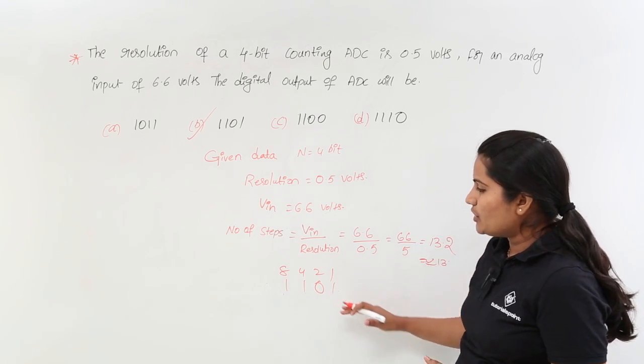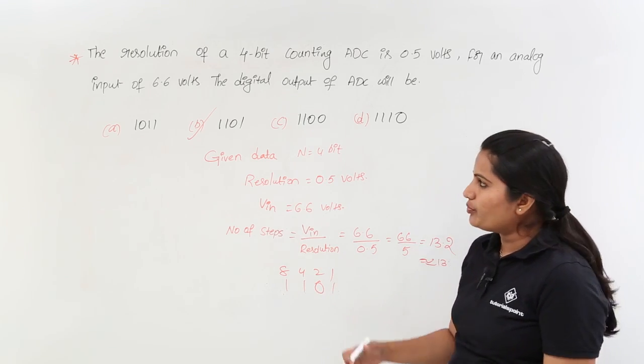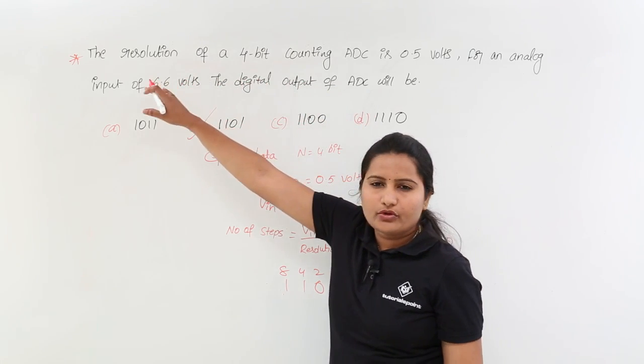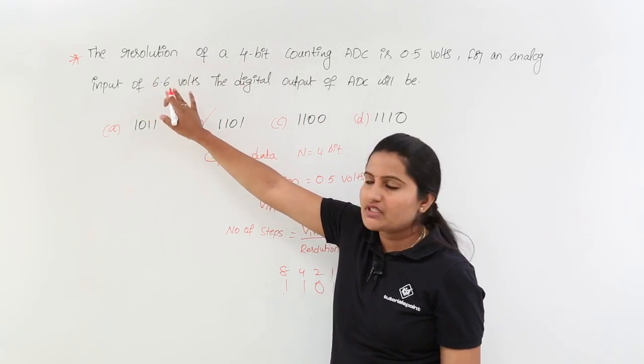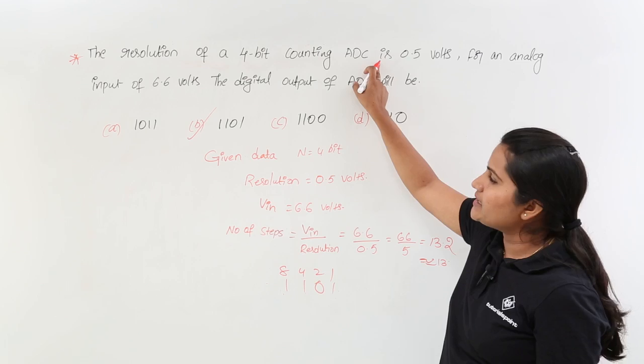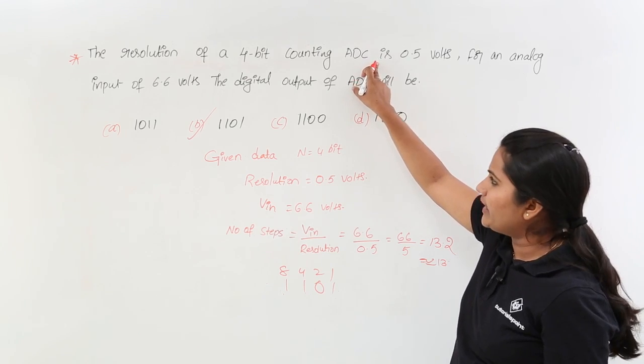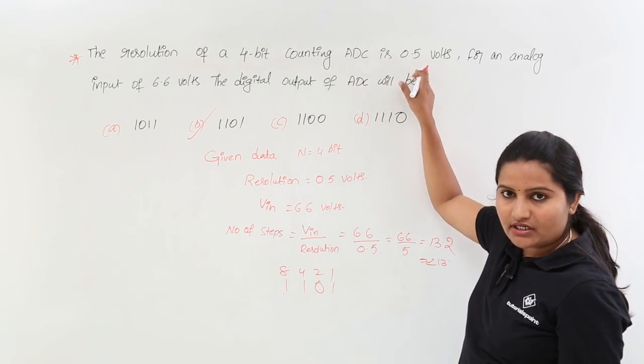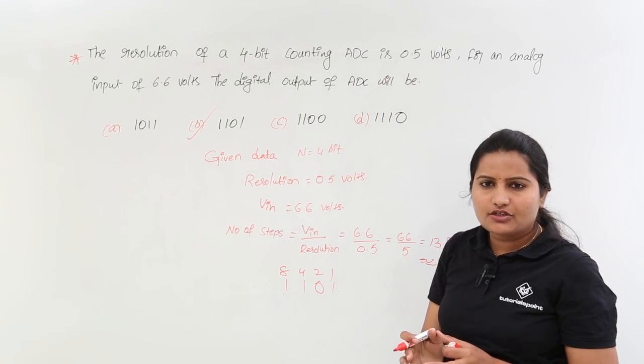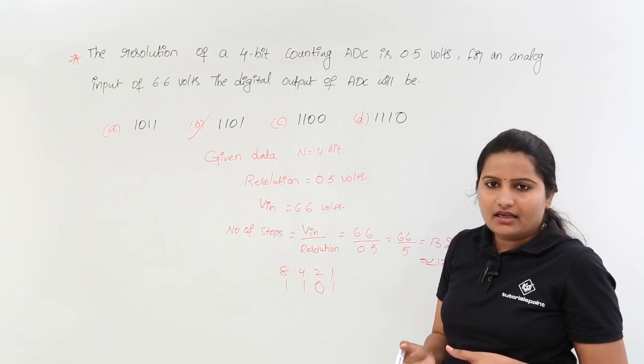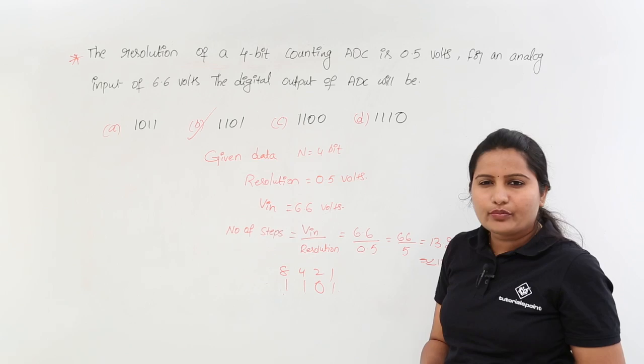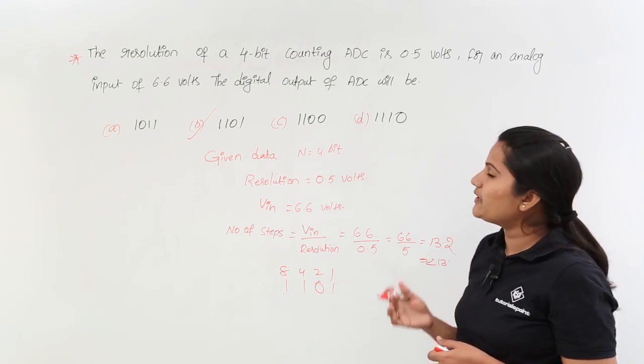Here 1101 is the digital output for analog input of 6.6 volts which is given to counting type ADC—4-bit counting type ADC with this resolution. With a particular resolution, ADC can produce different digital outputs.